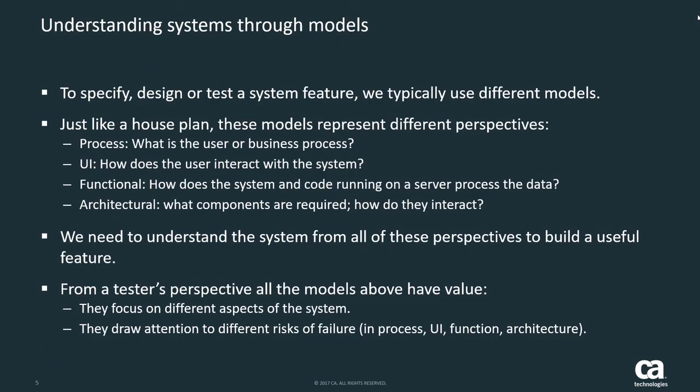In order to specify, design, or test a system feature, we might have one model, but more often we use different models. The specification might be in the form of a user story and examples. The design might be a diagram or flow chart that a developer sketches before they write the code. And the tester might make a table of modes of failure and use that as a checklist to test that same feature. These are all different models.